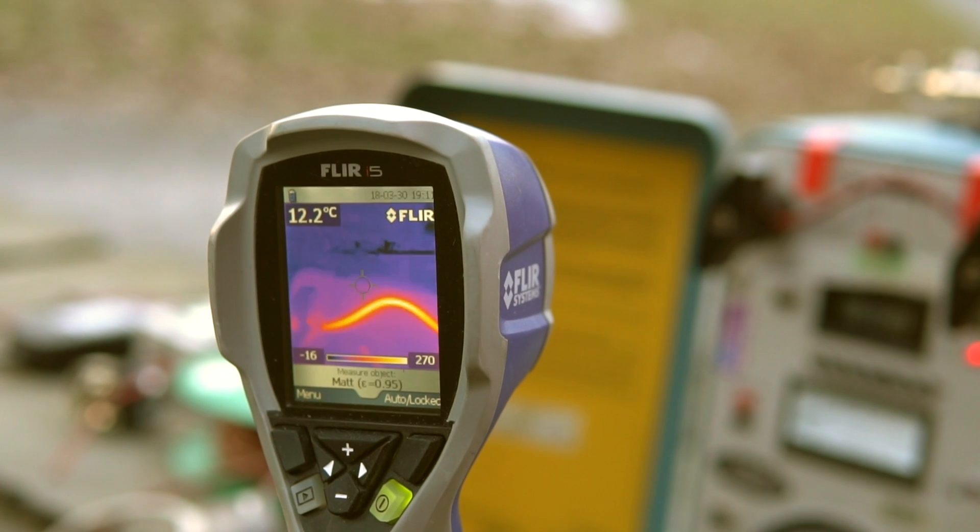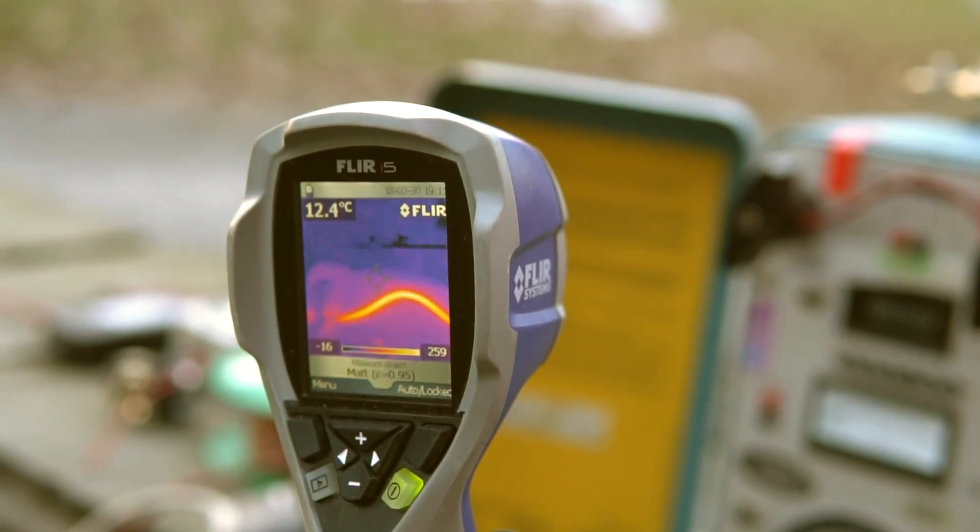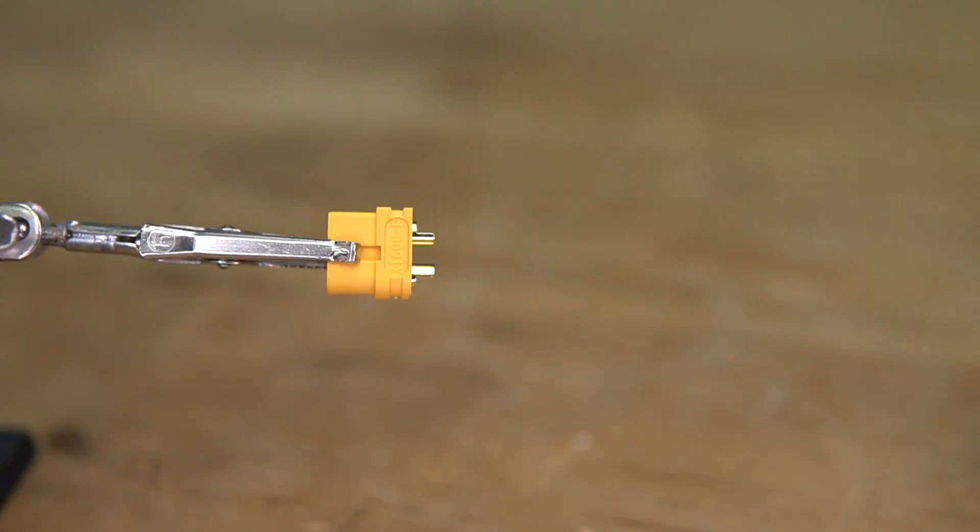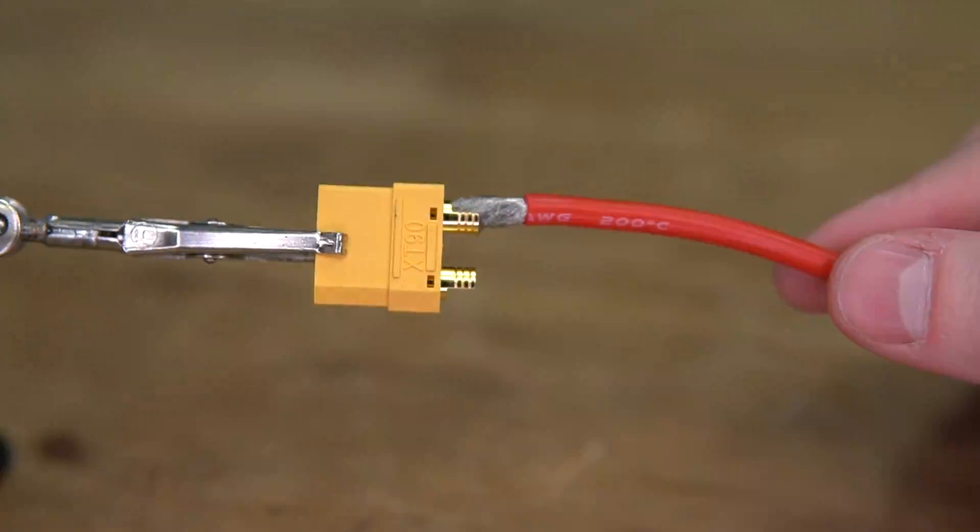What this translates to is, when using this connector, the only logical choice is a 10 gauge wire. So, if you're designing a drone that features an XT90, not only would you have to take into account the weight of the connector, but also the weight of the wire.